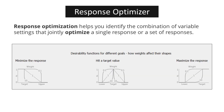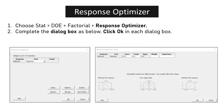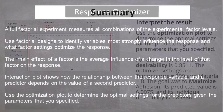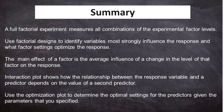Response optimization, also known as parameter optimization, is a crucial step in finding the best combination of variable settings to maximize a single response or a set of responses. Choose STAT > DOE > Factorial > Response Optimizer. Complete the dialog box and click OK. Based on the optimization plot, the optimal settings for the predictors are temperature at 300 and material B. The predicted value for adhesion at these settings is 6.0075, with an individual desirability of 0.85386.